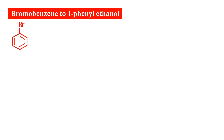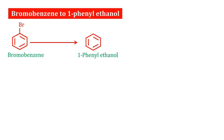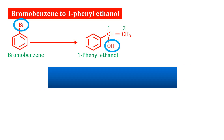This is Bromobenzene. This is 1-Phenyl-Ethanol. Here we have a Br group, that is Bromobenzene. Here we have an OH group, and positions 1 and 2 — that is 1-Phenyl-Ethanol.